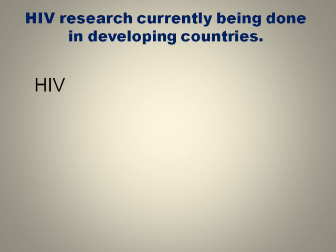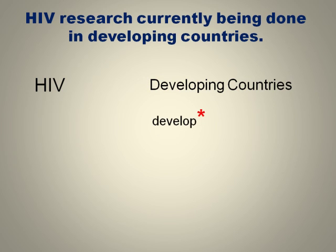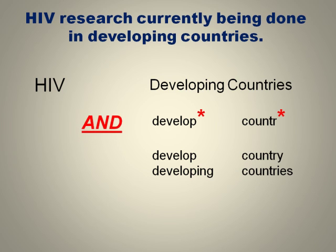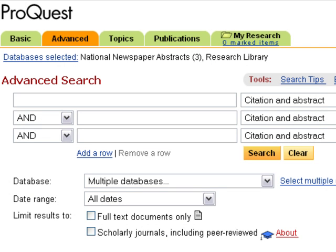First, decide what main concepts you can take out of your topic, then list some terms. HIV and developing countries are the two terms that would put us on the right path. Place a star next to DEVELOP so the database will know to search for any word beginning with those letters. Similarly, place a star after COUNTR so the database will know to search for country and countries. Use the Boolean operator AND to connect the words so the database will return results with both of these terms.